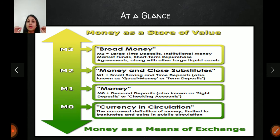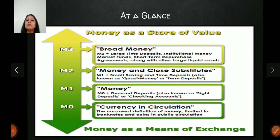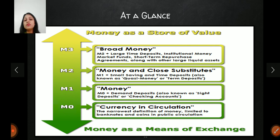At a glance: M0 is completely high powered money — reserve money, currency in circulation, the narrowest definition. M1 adds demand deposits because, while not currency, they are very liquid. M2 adds savings deposits, which are less liquid than demand deposits but can still be used like money and easily transferred. M3 is broad money, adding term deposits and any other asset considered liquid when finding the value of money stock in the economy.